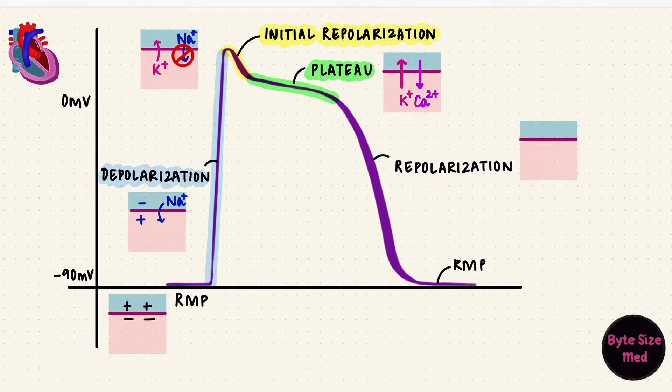The calcium channels are slow to open and slow to close. So at the end of the plateau, the calcium channels close. Potassium leaving the cell causes the potential to become more negative again. Repolarization. That's phase three.